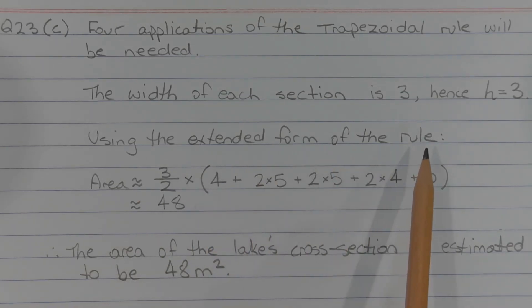So using the extended form of the rule, the area is approximately equal to three over two times, now open bracket, four plus two times five plus two times five plus two times four plus zero, close bracket, which is 48.